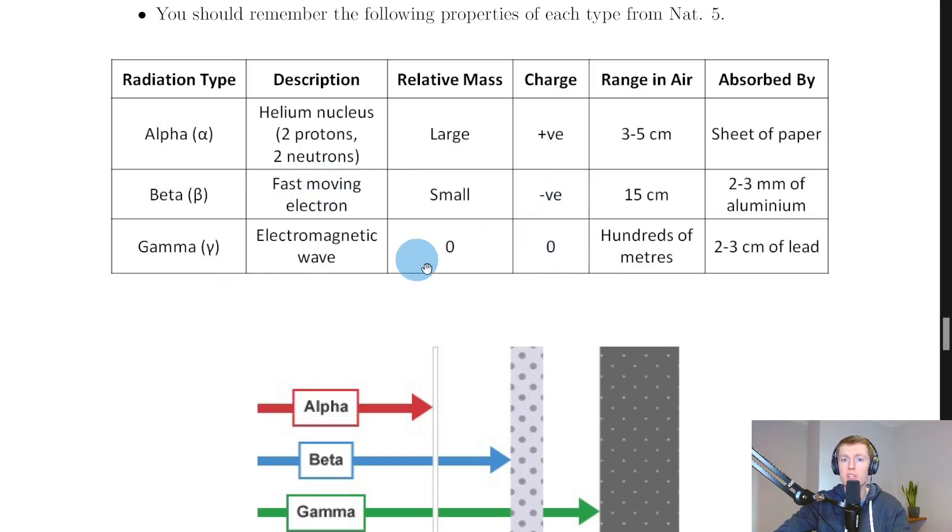We then have range in air. So remember alpha particles travel a very short distance in air, about three to five centimeters. Beta particles can travel further in air though, from a range of about 15 centimeters up to a few meters. But gamma rays can travel the furthest in air, up to hundreds of meters or even infinite distances.